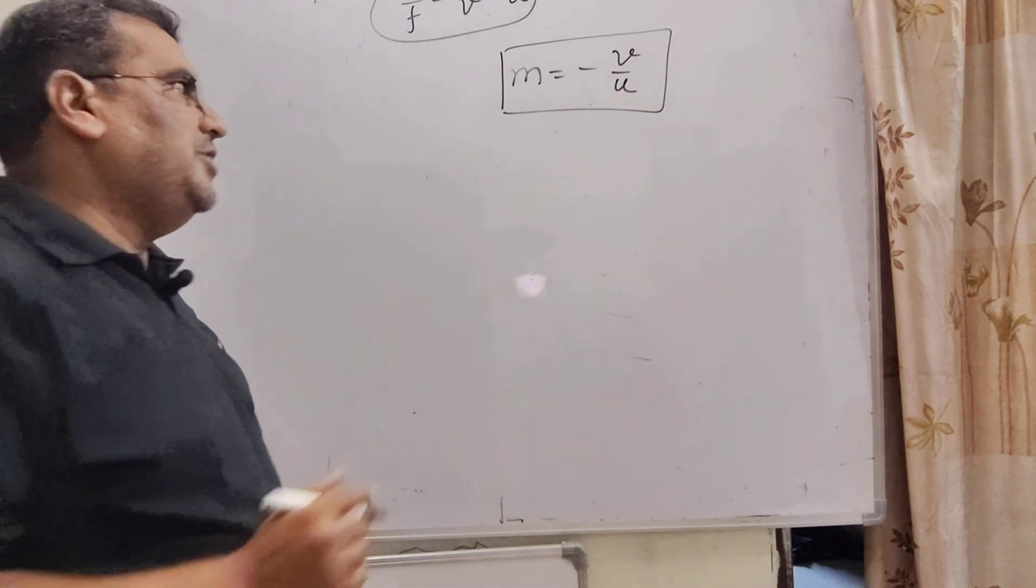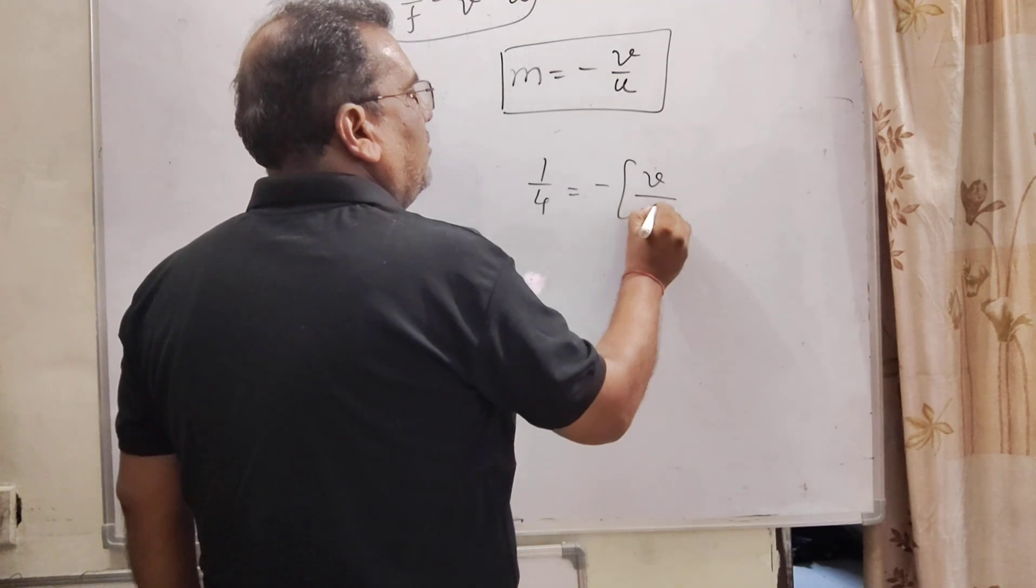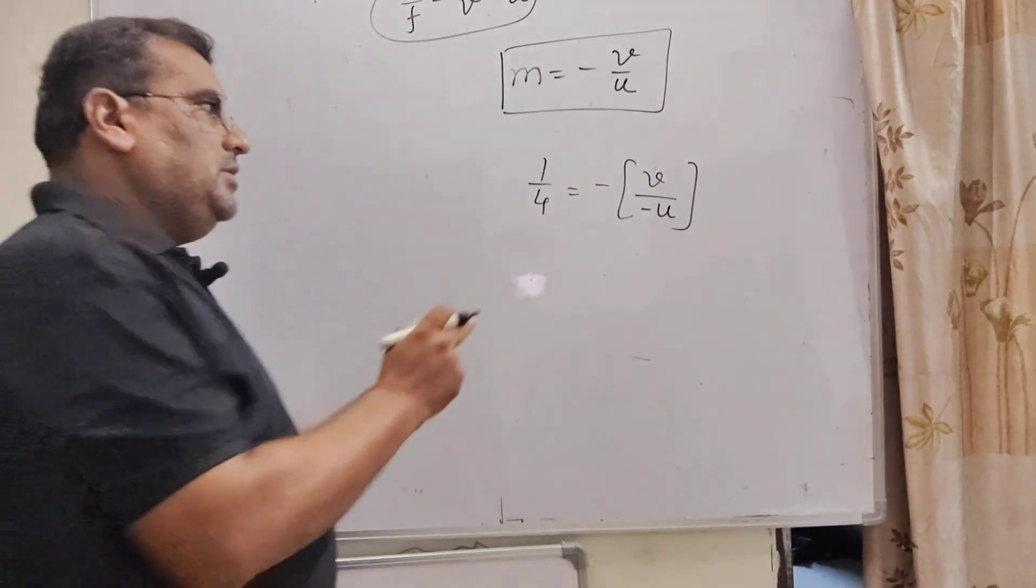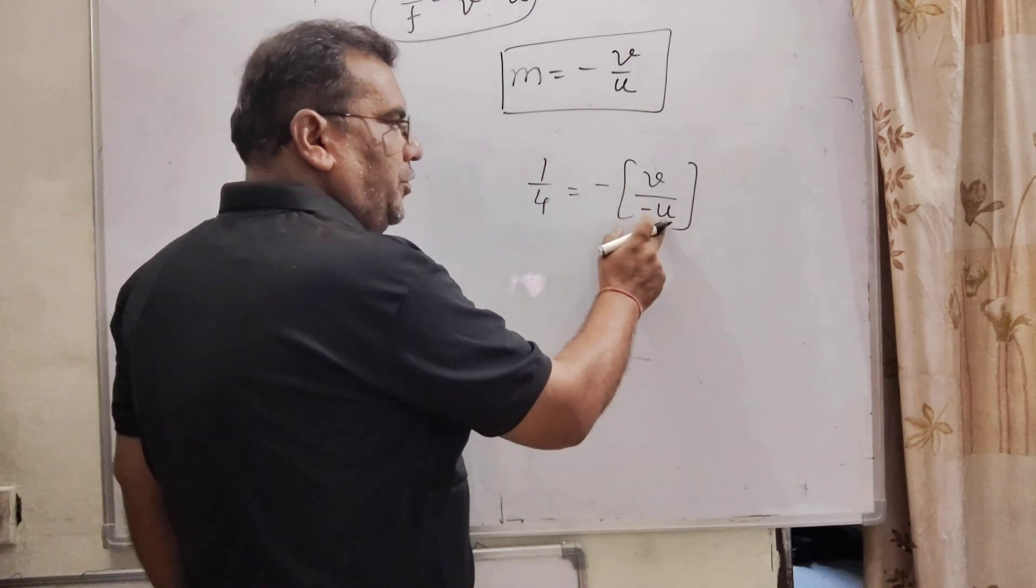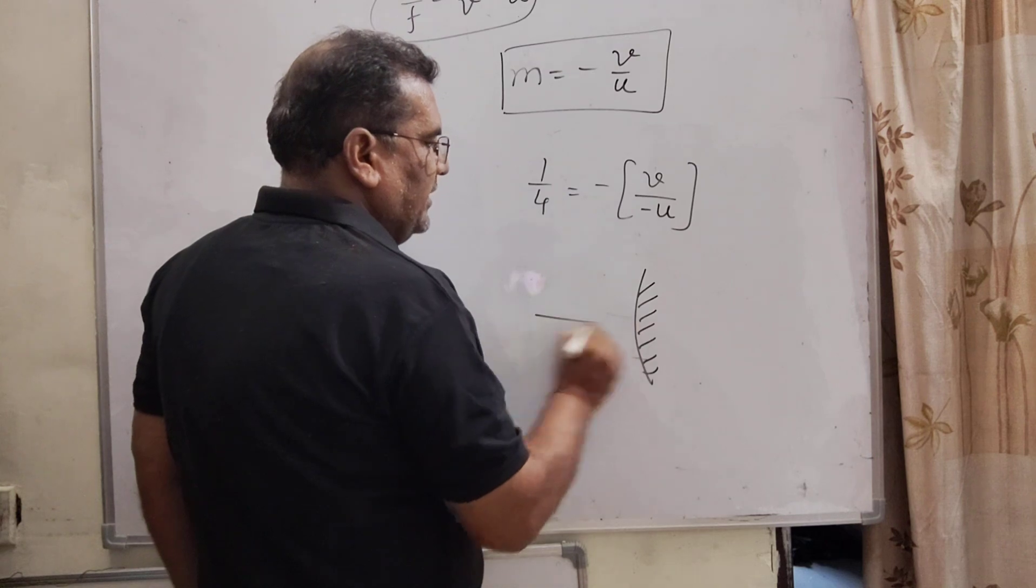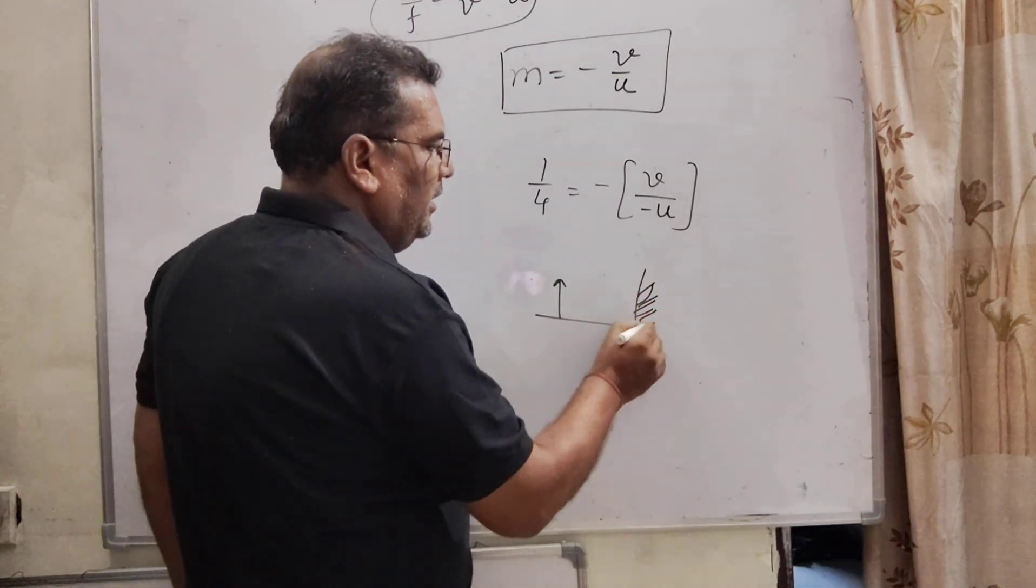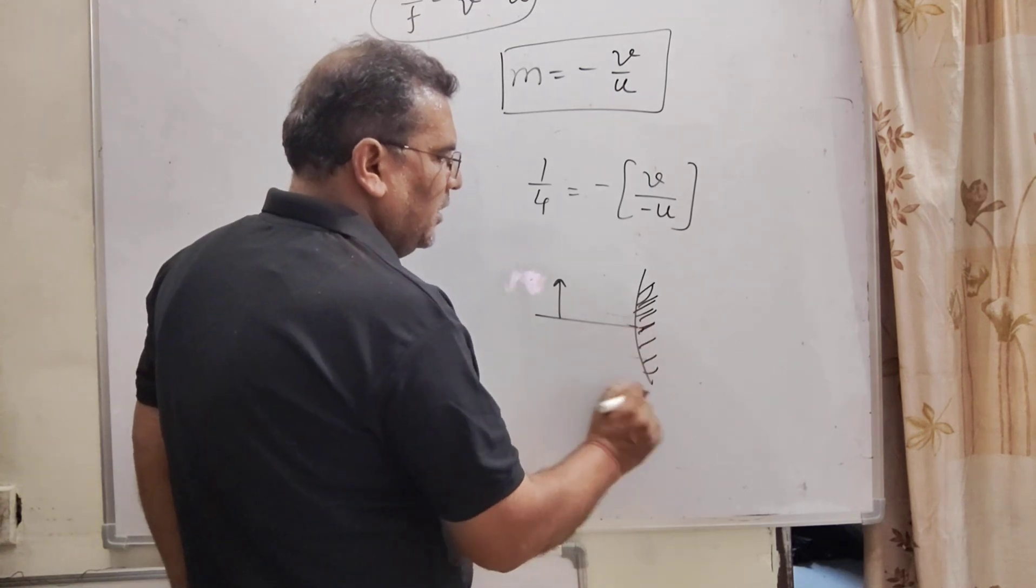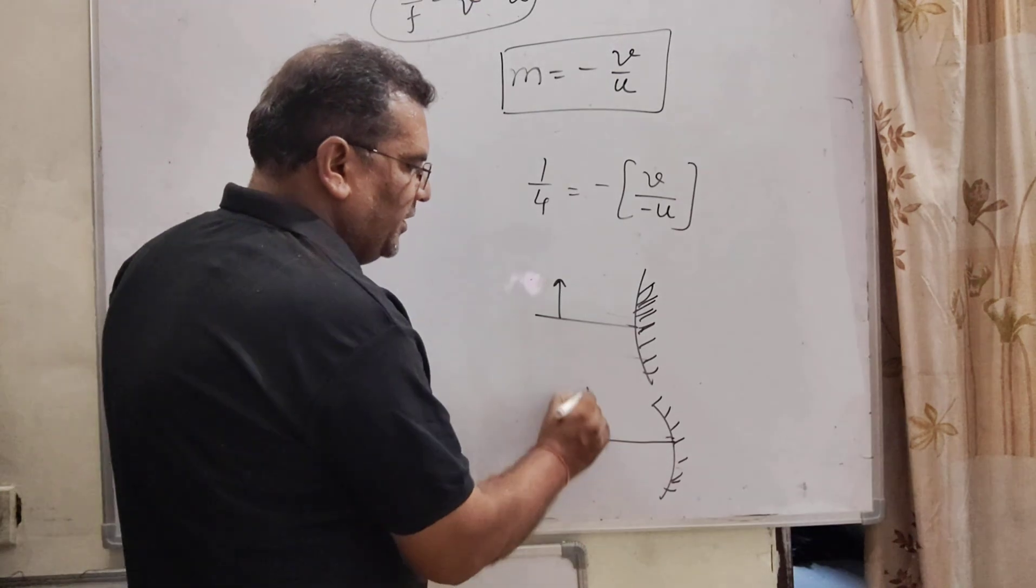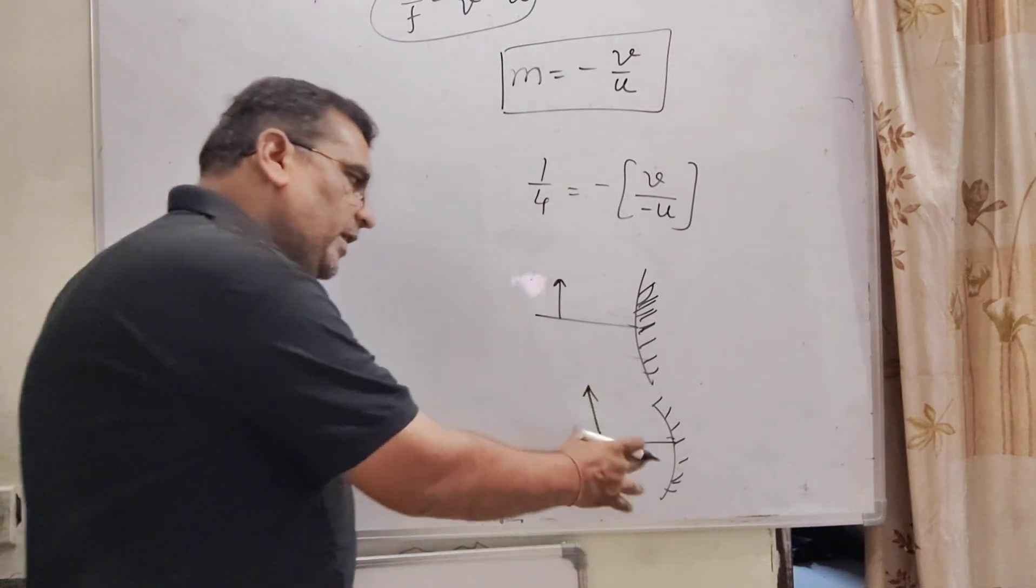Here, given that the magnification is 1 by 4. Here minus V and here minus U. Why we have put here minus U? Because you know that V is unknown. But U is always kept in front of the reflecting surface to form an image. You can take any mirror, convex or concave, but it is very important. Object is always kept in front of the reflecting surface. So always U is negative.